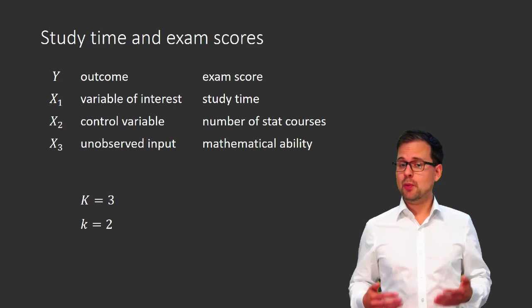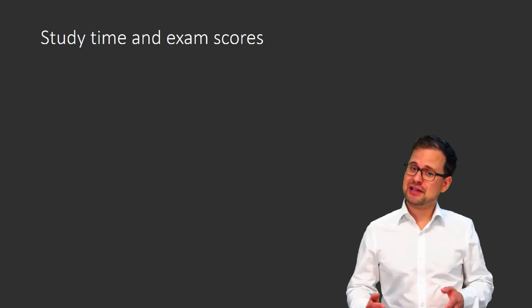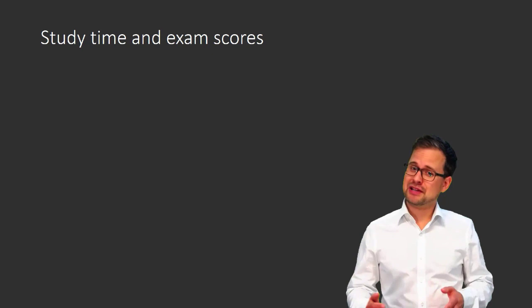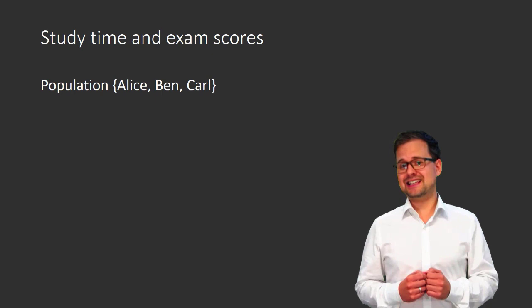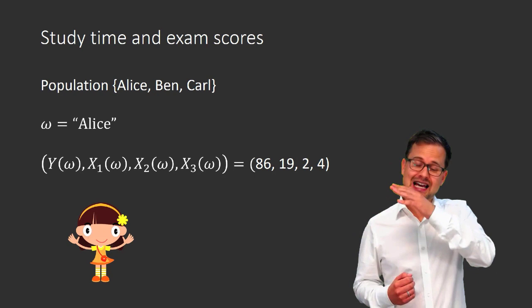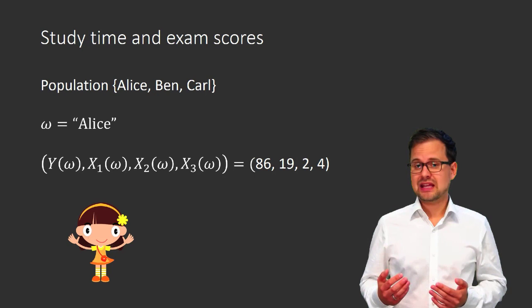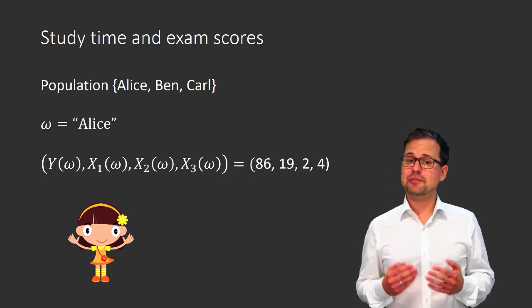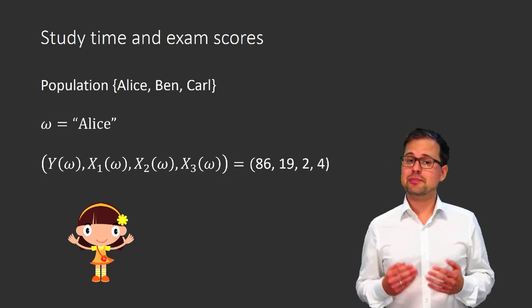Before we move on, let me remind you of how we use random variables to describe a population. Suppose our population consists only of three individuals: Alice, Ben, and Carl. One point in our population is omega equals Alice. To describe Alice, we evaluate the random variables at omega equals Alice. Alice has 86 points on the exam, has studied for 19 hours, has taken two statistics classes before starting the econometrics class, and has a mathematical ability of four.